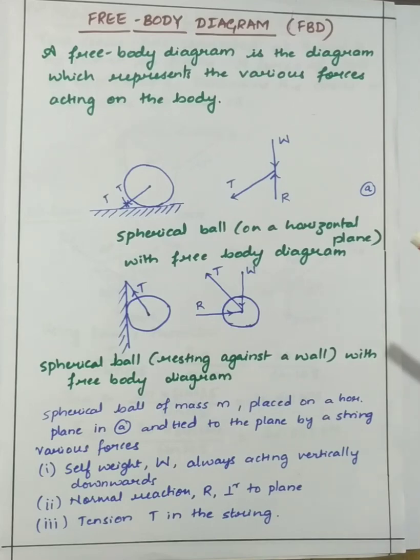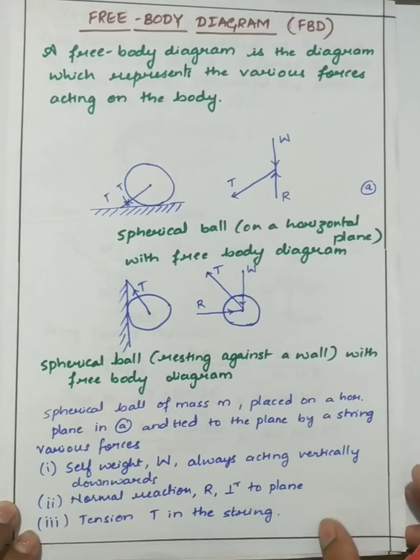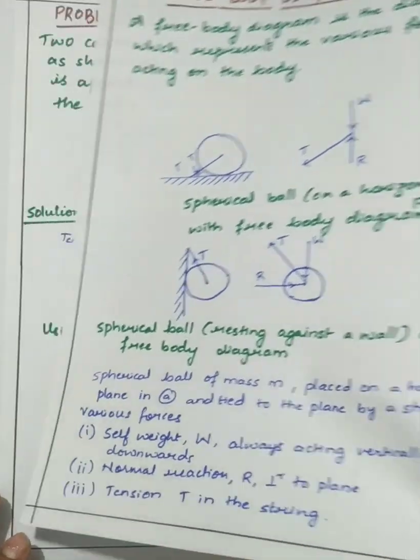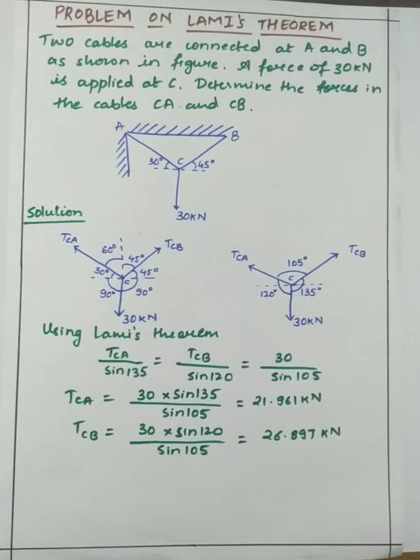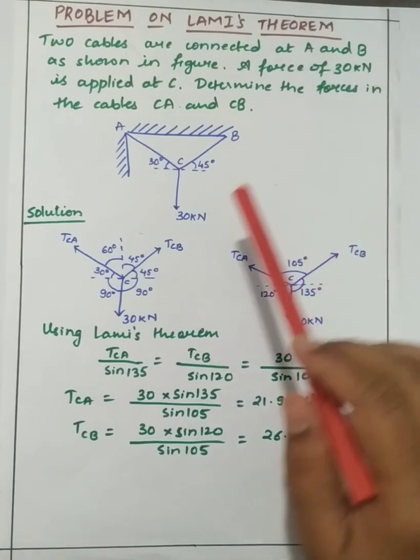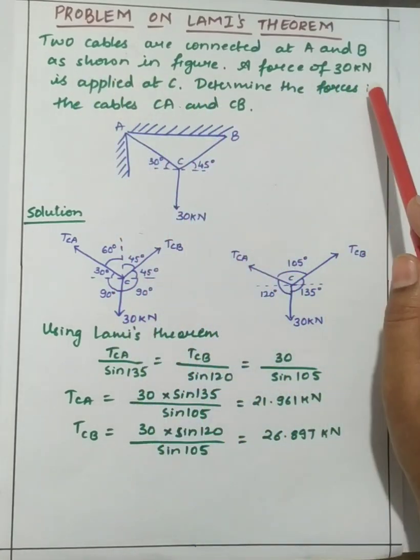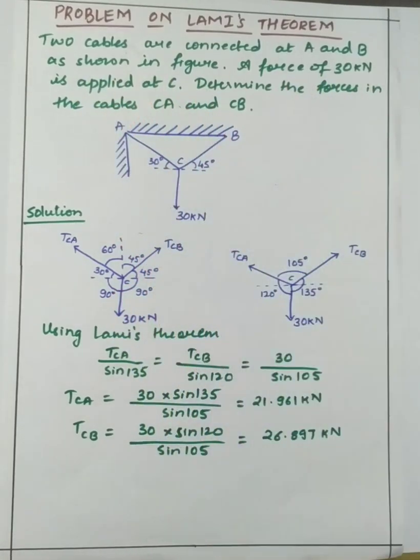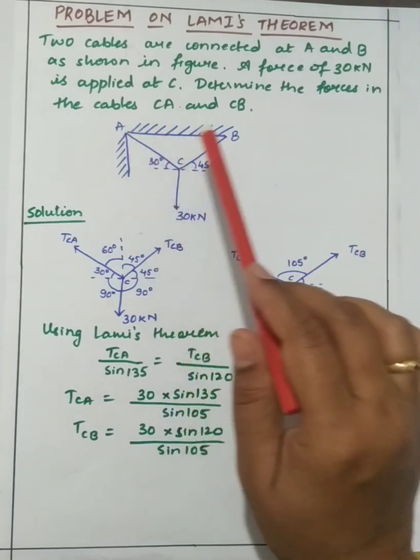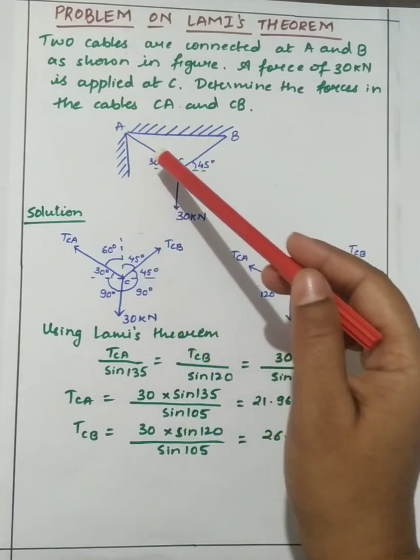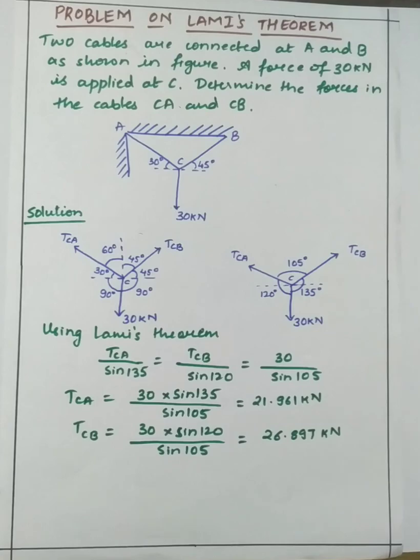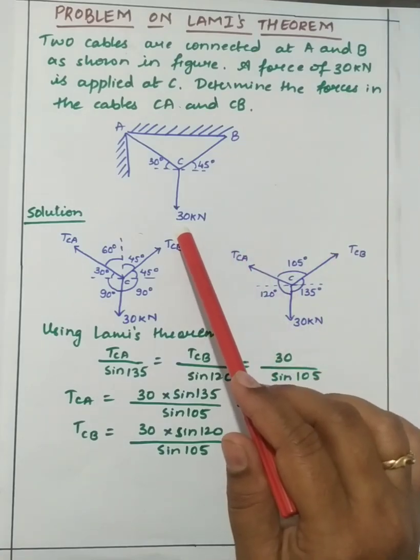Now let us solve a problem on Lami's theorem. Two cables are connected at A and B as shown in this figure. A force of 30 kilo newton is applied at C.